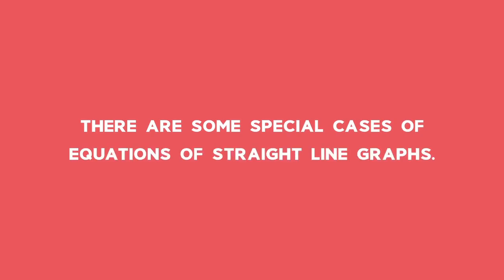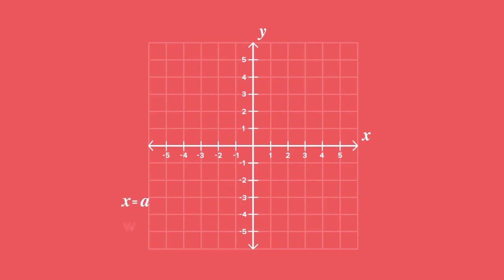There are some special cases of equations of straight line graphs. When x equals a, where a is an element of real numbers, we have a vertical straight line perpendicular to the x-axis and parallel to the y-axis. The gradient of this line is undefined. For example, x equals 3.